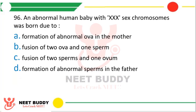Question number 96. An abnormal human baby with XXX sex chromosomes was born due to: formation of abnormal ova in the mother, fusion of 2 ova and 1 sperm, fusion of 2 sperm and 1 ovum, or formation of abnormal sperm in the father? The correct answer is option A — due to formation of abnormal ova in the mother.